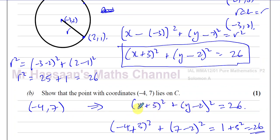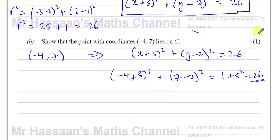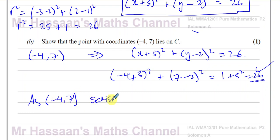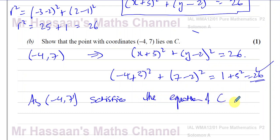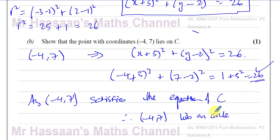The left-hand side equals the right-hand side. Therefore, since negative 4, 7 satisfies the equation of the circle, negative 4, 7 lies on the circle — it's on the circumference of the circle. Simple as that — that's part B.